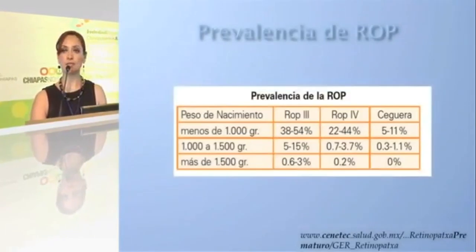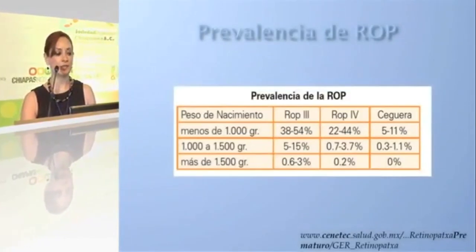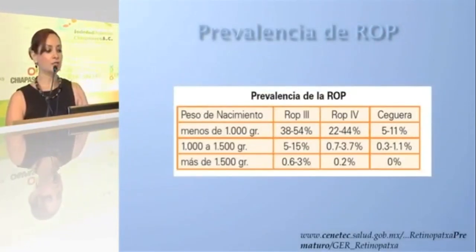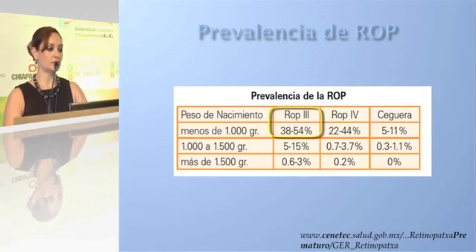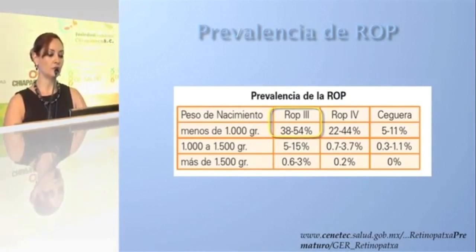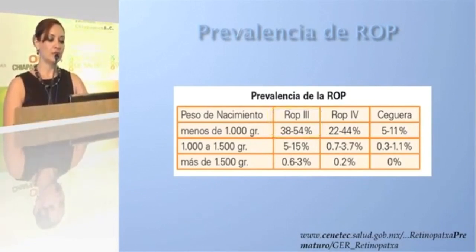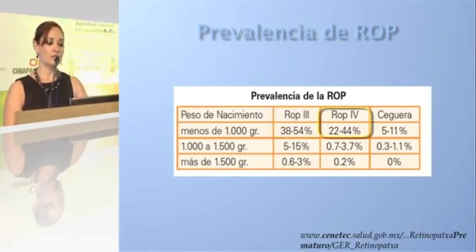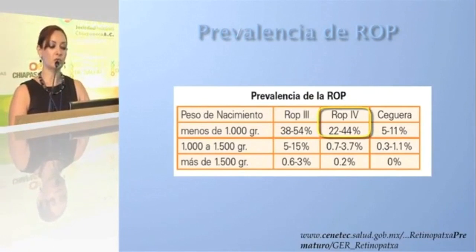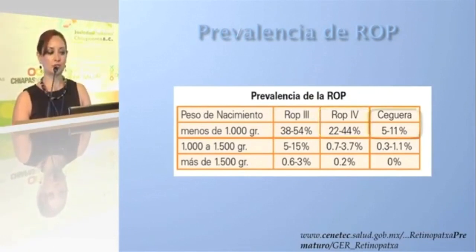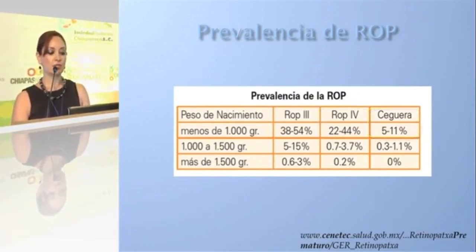The prevalence of retinopathy in infants under 1 kg: ROP stage 3 occurs in 38 to 54%, and ROP stage 4 occurs in 22 to 44%, with an 11% rate of blindness. In infants under 1.5 kg, the incidence of blindness diminishes considerably.